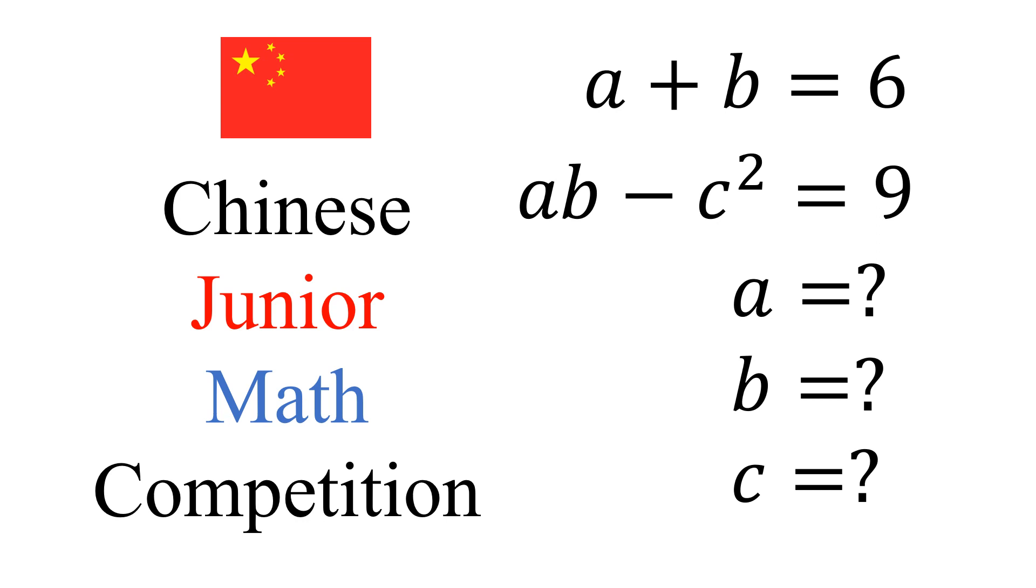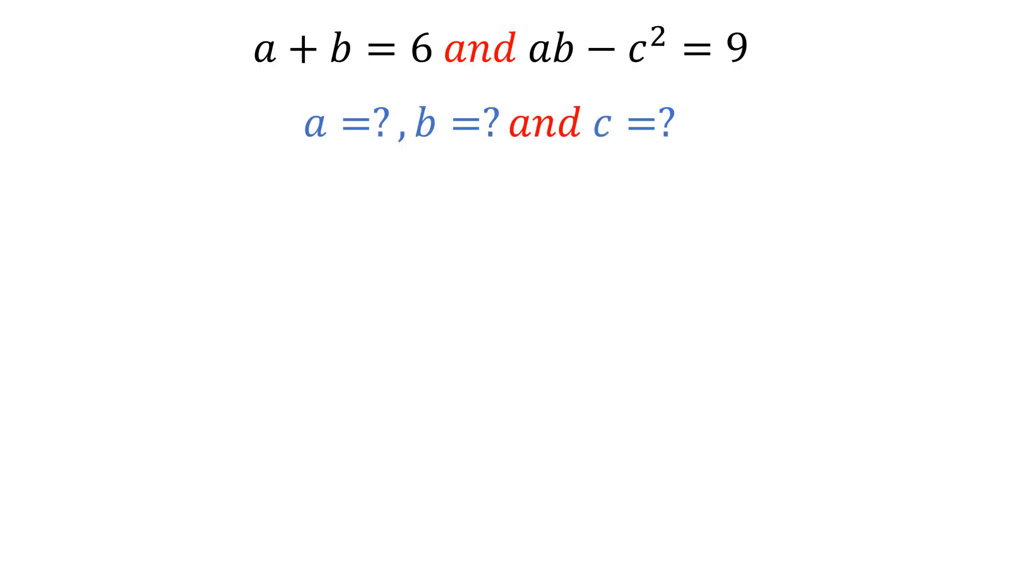Welcome back to my channel. In today's video, we are going to solve this question. In this question, there are two equations: A plus B is equal to 6, and AB minus C squared is equal to 9, and we have to find A, B, and C.